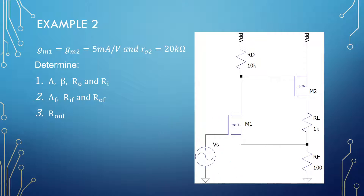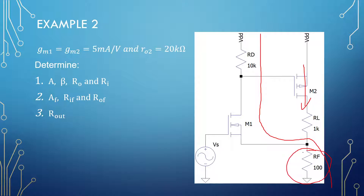Second example: a common-source amplifier with degeneration followed by the transconductance of a second transistor. The feedback resistor is 100 Ω. Both transistors are biased at gm = 5 mA/V; the biasing structures are not shown but are typically current sources. The output impedance of the second transistor is 20 kΩ. Since these are MOSFETs, there are no loading effects between the two stages — unlike BJTs.